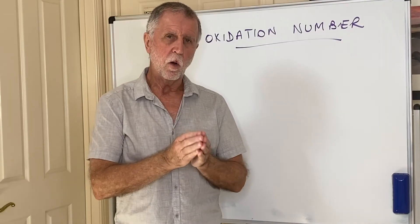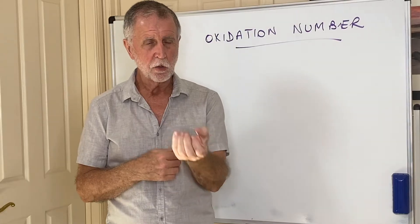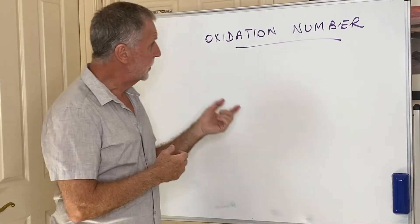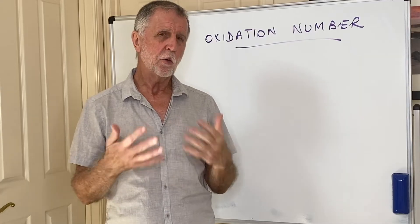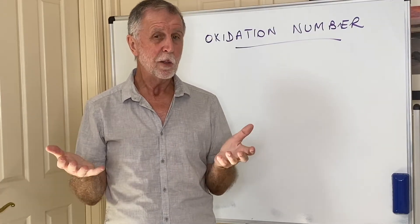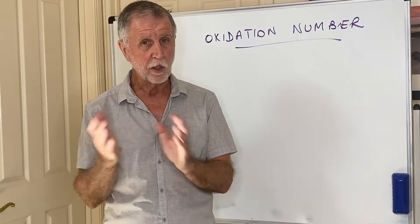There is another way of looking at oxidation and reduction, and that is in terms of oxidation number. Essentially, this is a theoretical concept which is again based on the loss or gain of electrons.